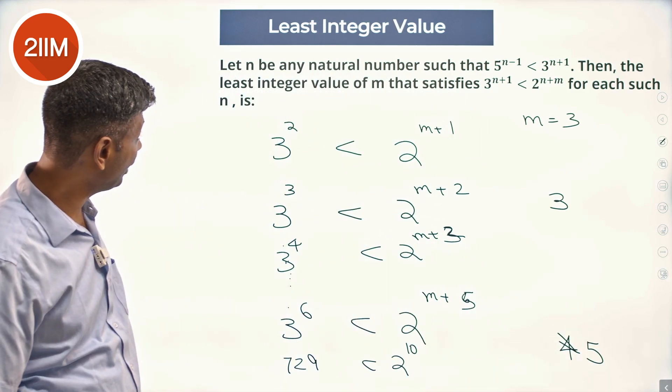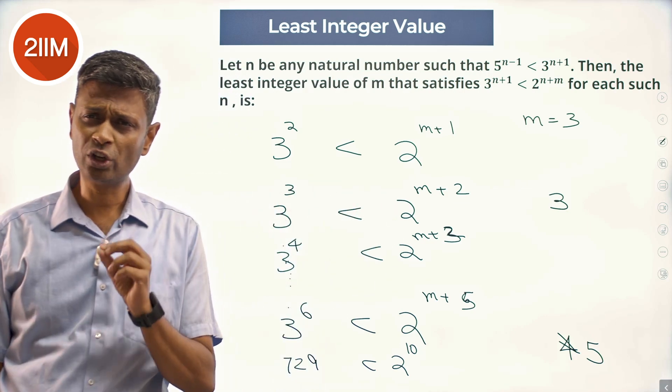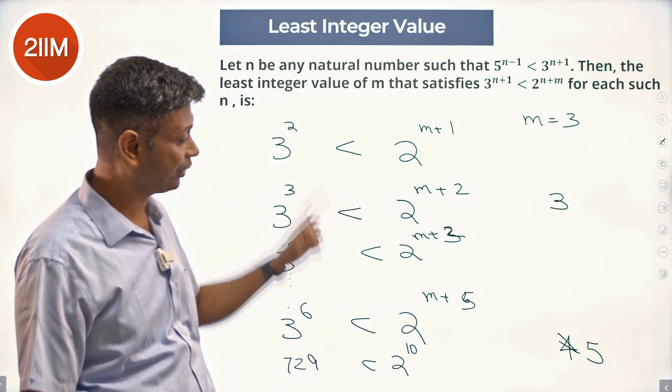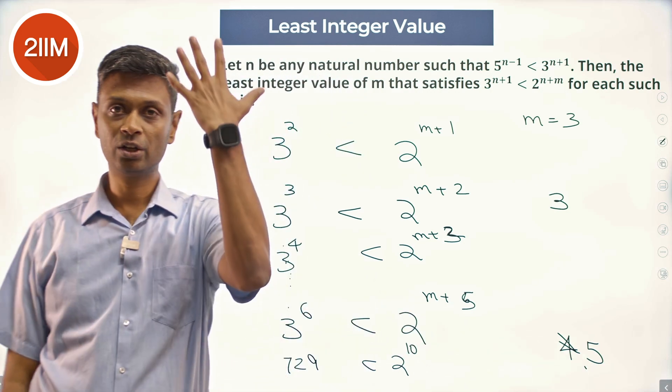So the value of m that satisfies this for all such n is the smallest possible value for everything, should be at least 5. The answer, the least value m can take is 5.